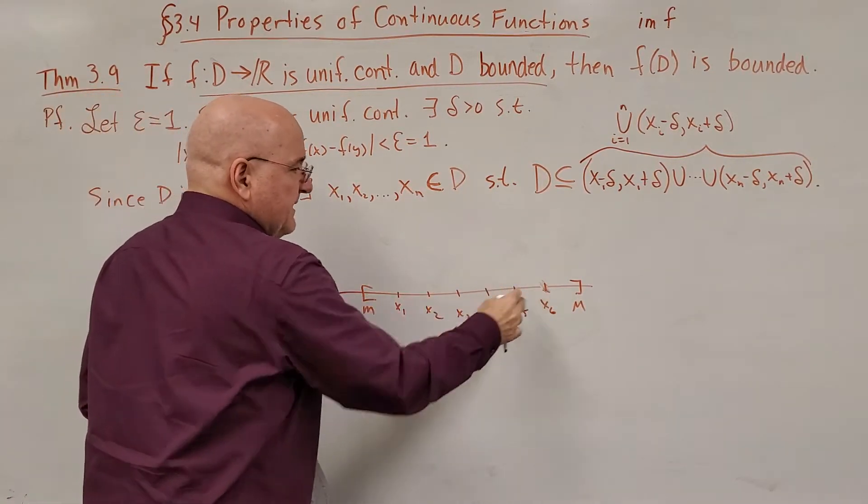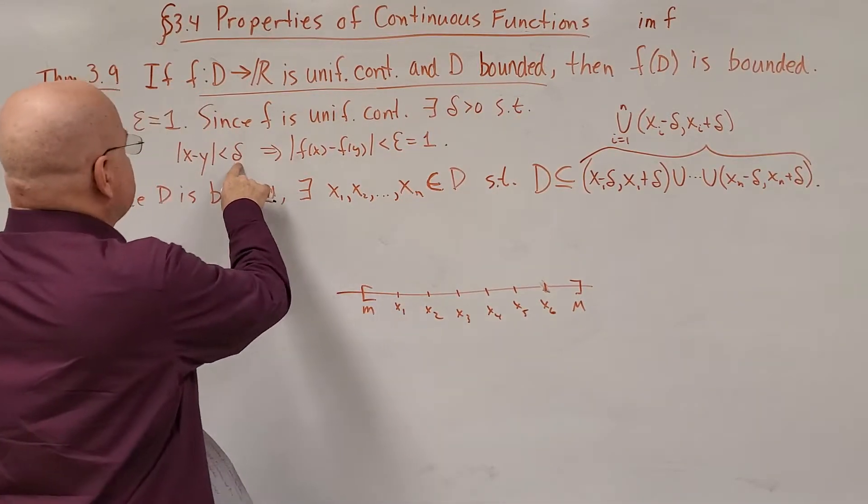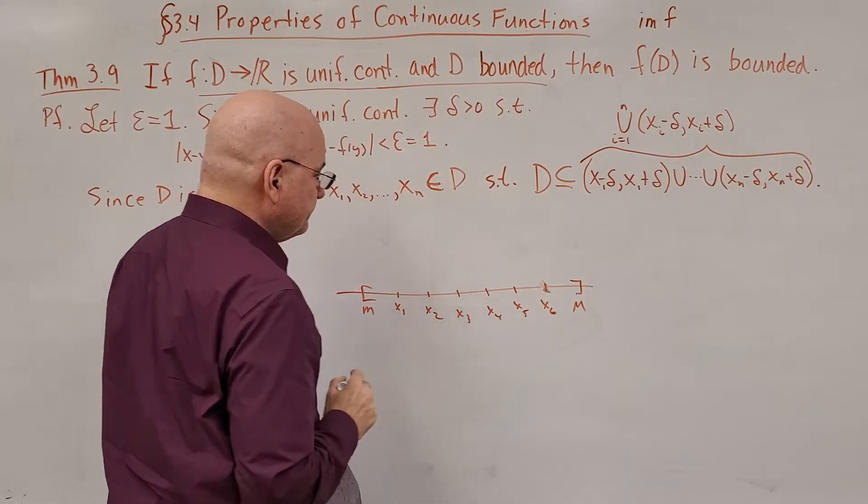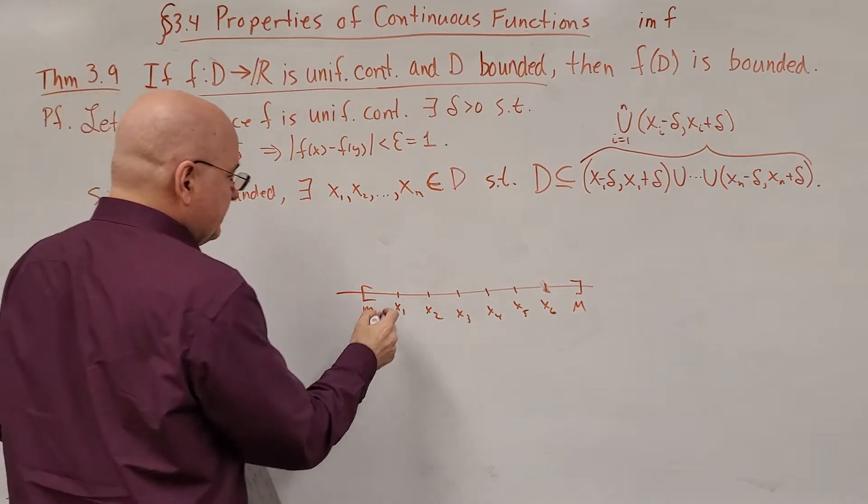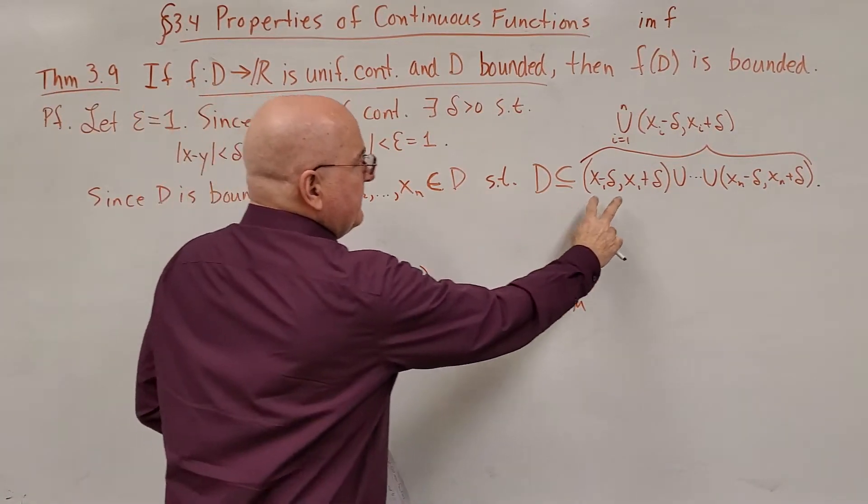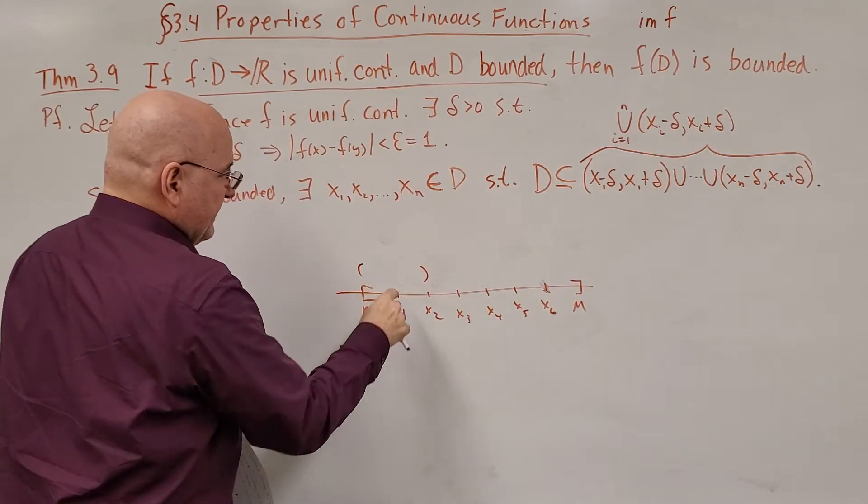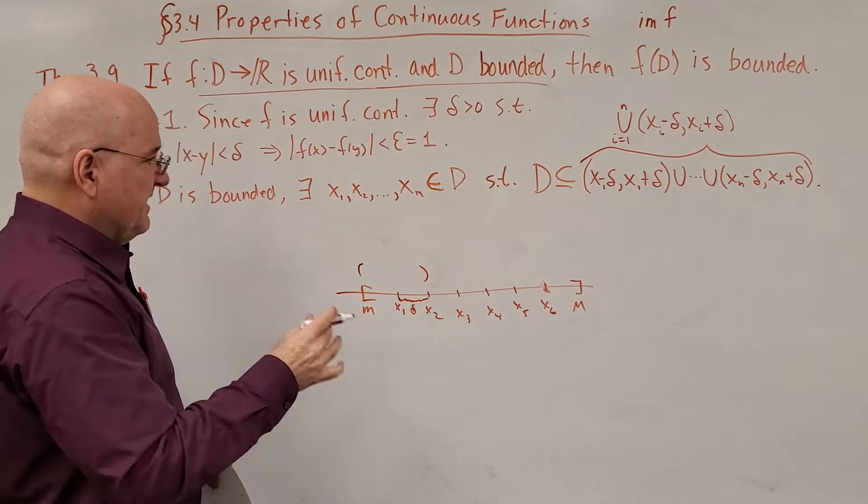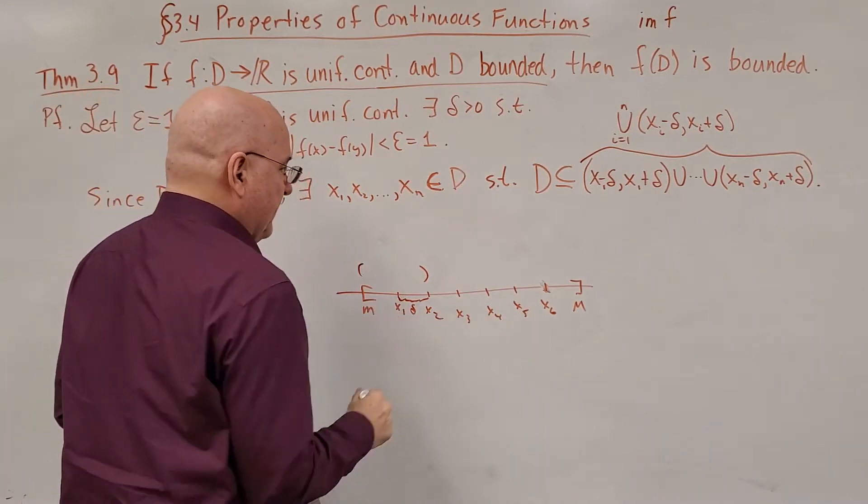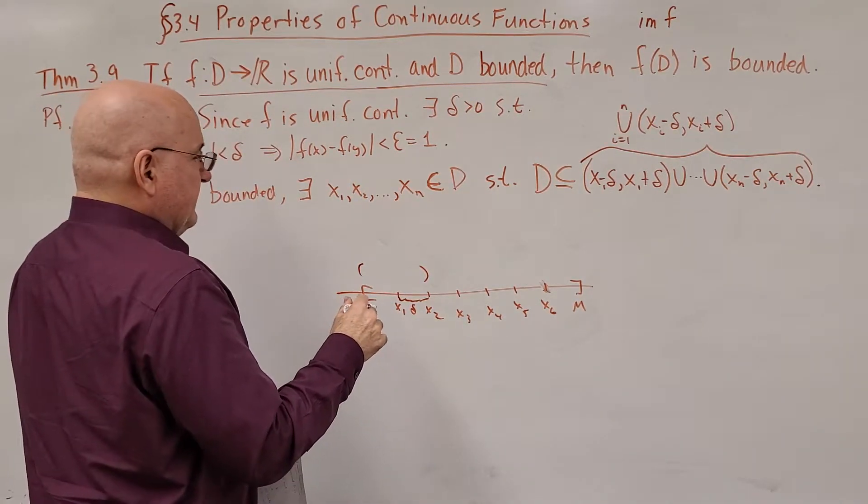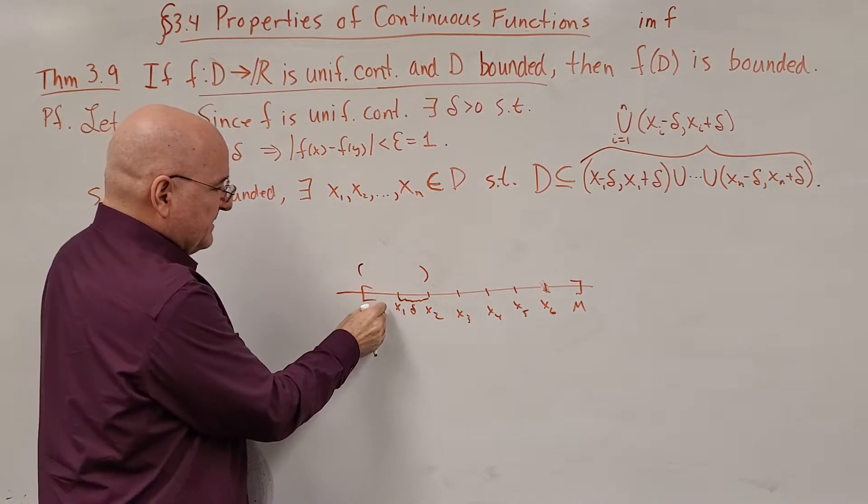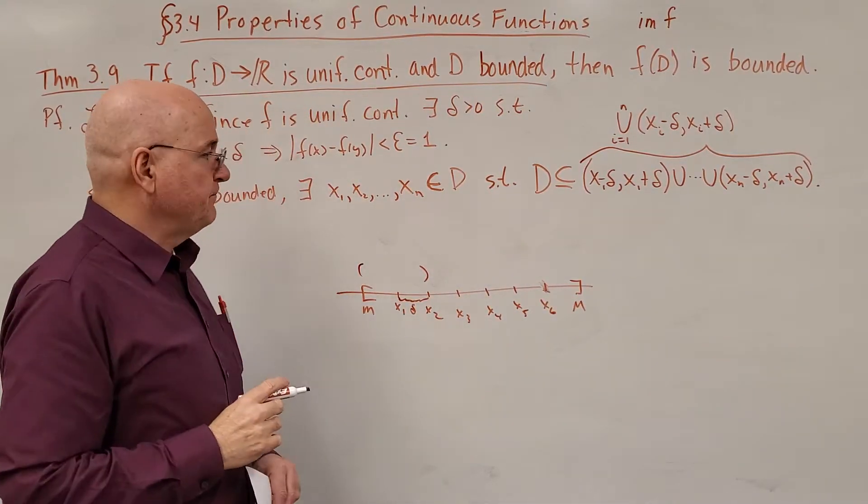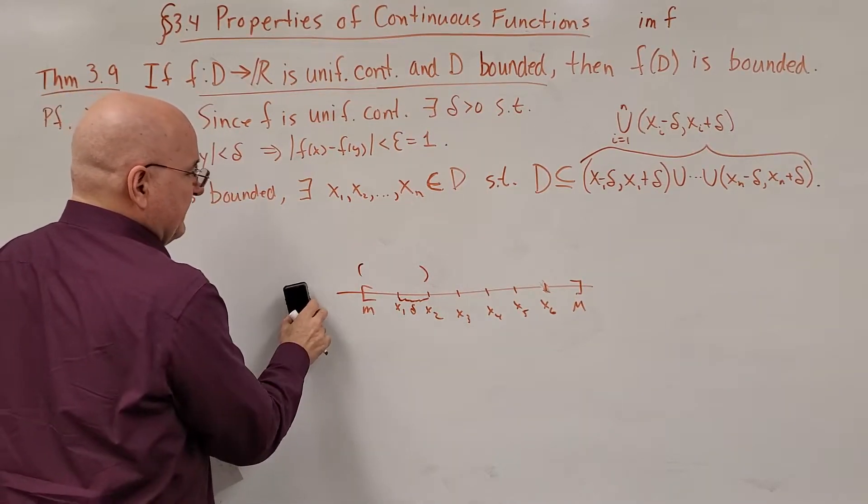So it doesn't have to be evenly spaced like I made it. But the smaller delta was chosen to be, the closer I would make these values to each other. So in this case, let's just say that I made them delta apart. So the first interval here would be x₁ plus or minus δ. So that means that that width is δ. So because D is bounded, we can define this set of points. One more time, if delta were a very small number, then I would have put x₁, x₂, x₃, and I might have needed 50 points, or 100 points, or 1,000 points.